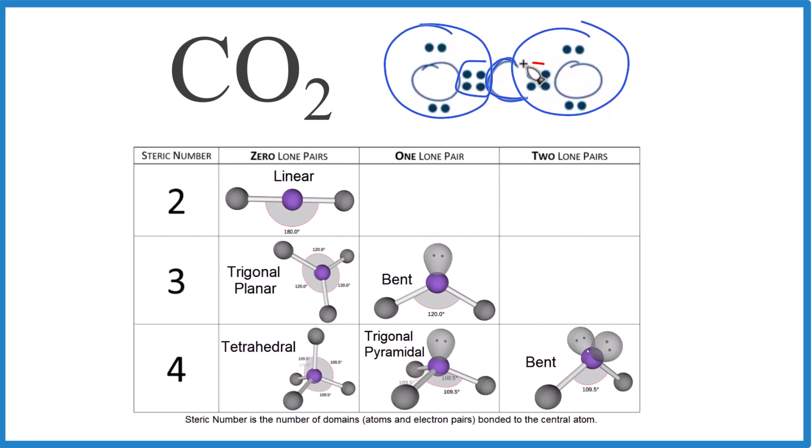All the electrons are involved in the chemical bonds. So since we have those two things bonded to the central carbon, we have a steric number of two, we don't have any lone pairs.